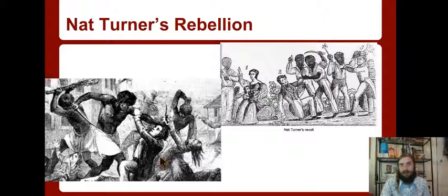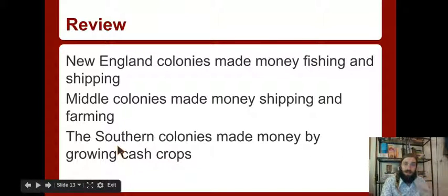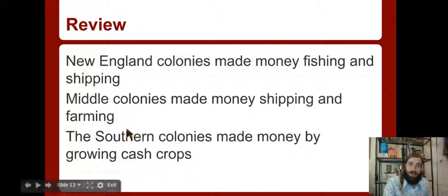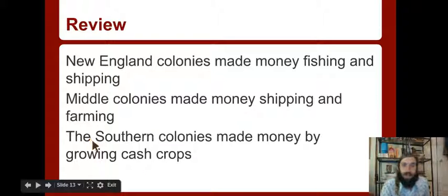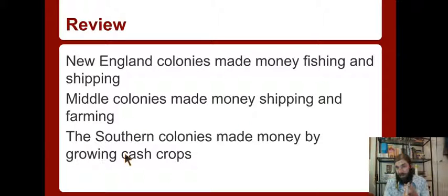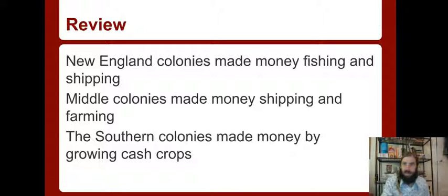One more vocabulary word for review: these different colonies made different things, so they had to depend on each other for different goods. The important vocabulary word is interdependence - when they depend on each other for their different goods. The southern colonies provided cash crops for New England, and New England could ship those cash crops to England for the southern colonies, so they both depended on each other for things they didn't have in their own regions. New vocabulary words from today: interdependence and indentured servants - those are going to show up on your flashcards. Have a great weekend.